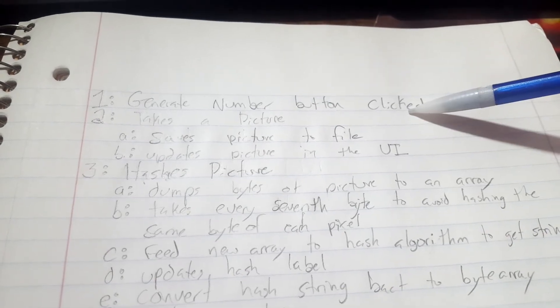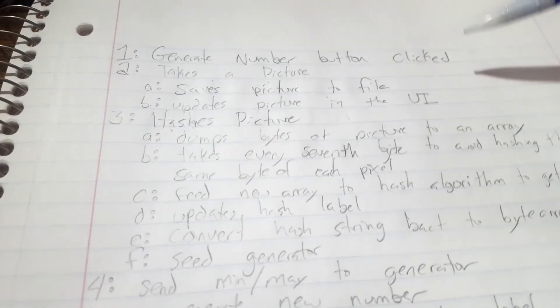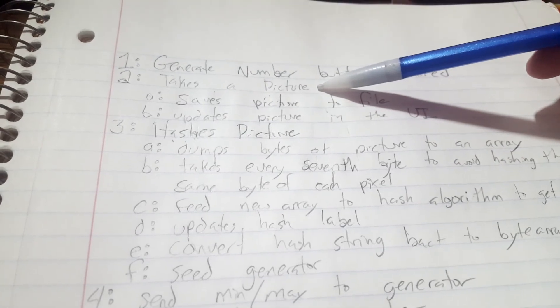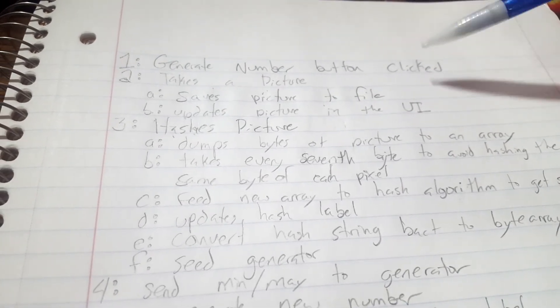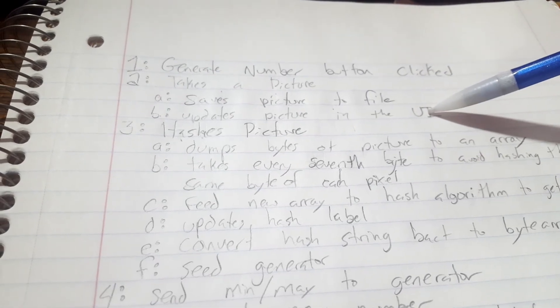So you start with clicking the generate new number button. It takes a picture, saves that picture to a file, and then later on it reads that picture and it updates the picture in the UI.